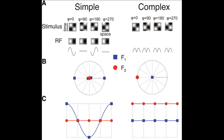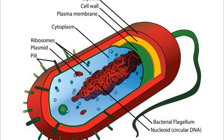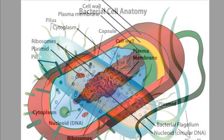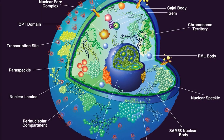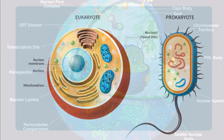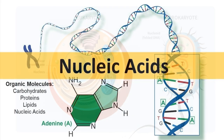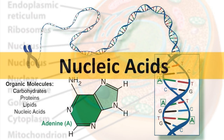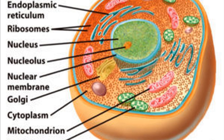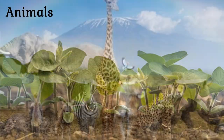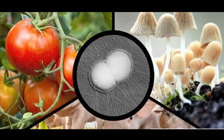All cells are either simple or complex. Simple cells, which make up the bacteria and blue-green algae, do not have a nucleus and are called prokaryotes, meaning 'before nucleus.' A complex cell has a nucleus that contains DNA, a nucleic acid that stores genetic information. These cells are called eukaryotes, meaning 'true nucleus.' Animals, plants, fungi, and some single-celled organisms have complex cells.